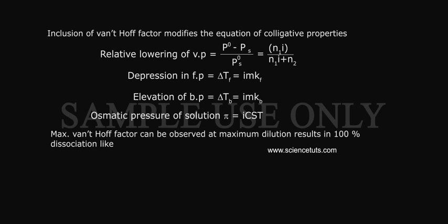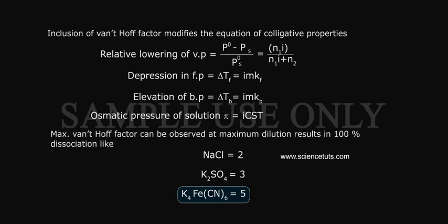Maximum Van't Hoff Factor can be observed at maximum dilution results in 100% dissociation. Like NaCl is equal to 2, K2SO4 is equal to 3, K4FeCN6 potassium ferrocyanide is equal to 5.